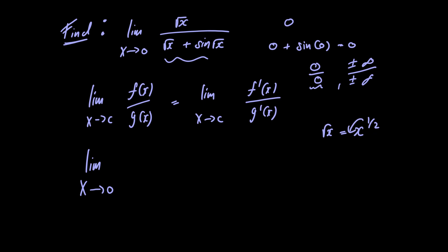then subtract 1 from the power. We get (1/2)x^(-1/2), which we can rewrite as 1/(2√x). We've brought the negative power down to the denominator.